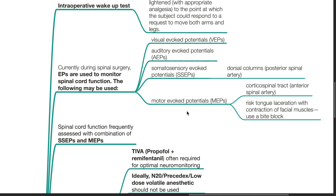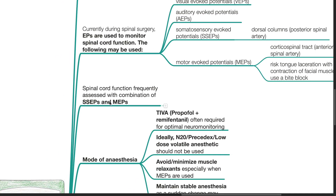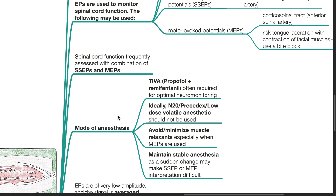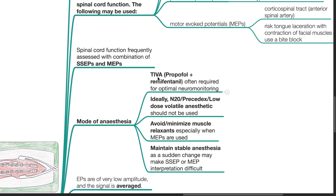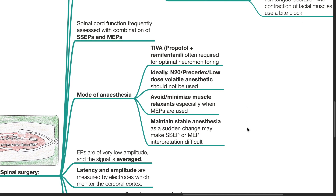When MEPs are measured, there is a risk of tongue laceration with the contraction of facial muscles — use a bite block. Spinal cord function is frequently assessed with a combination of SSEPs and MEPs. The mode of anesthesia of choice is total intravenous anesthesia with propofol plus remifentanil, which allows optimal neural monitoring. Ideally, nitrous oxide, dexmedetomidine, low-dose volatile anesthetics, and muscle relaxants should not be used. Maintain stable anesthesia, as a sudden change may make SSEP or MEP interpretation difficult.